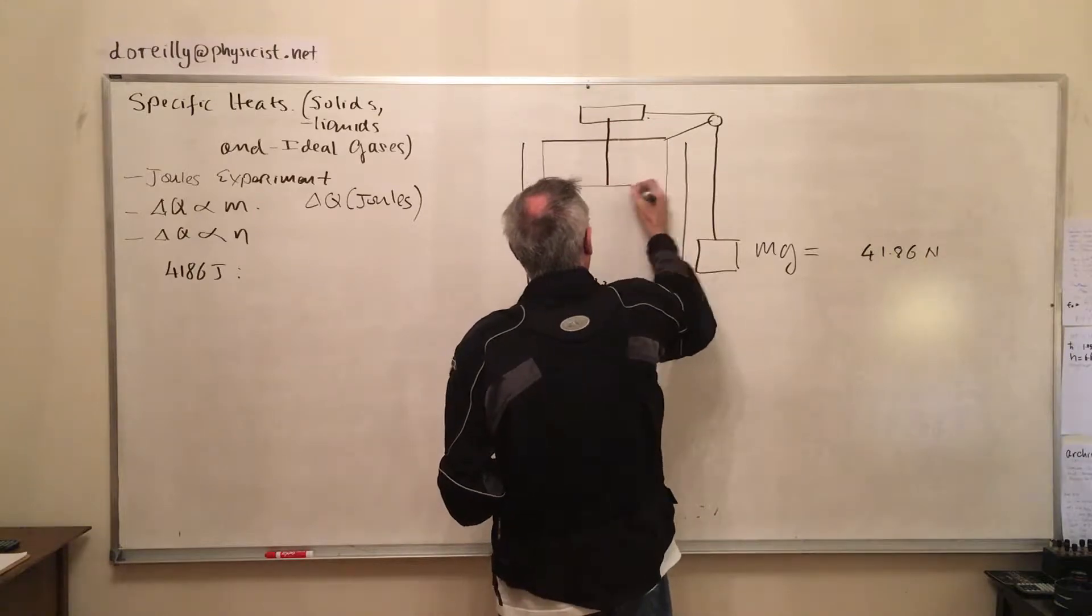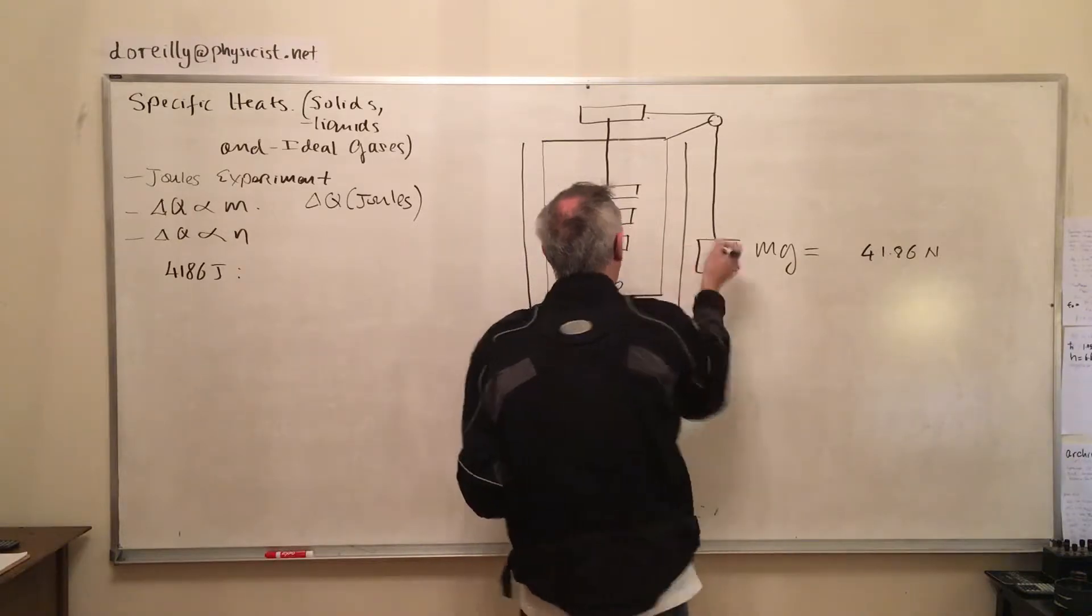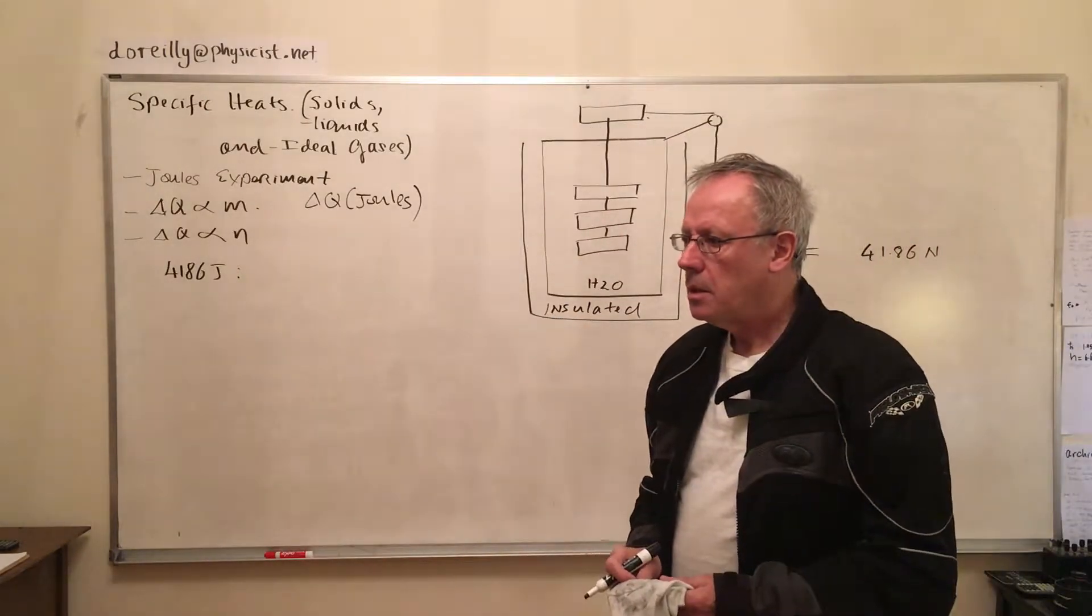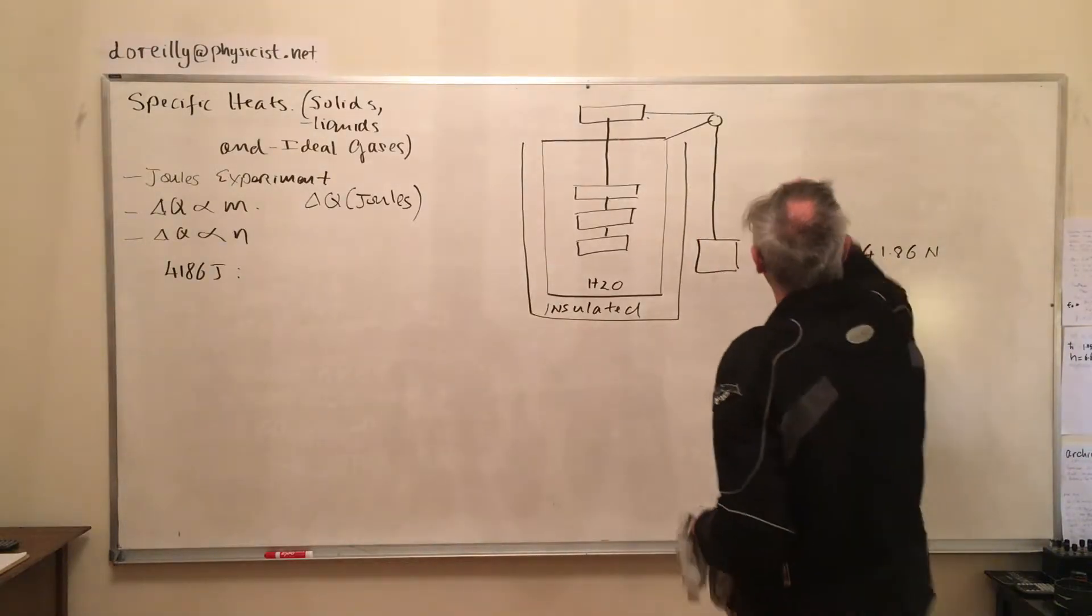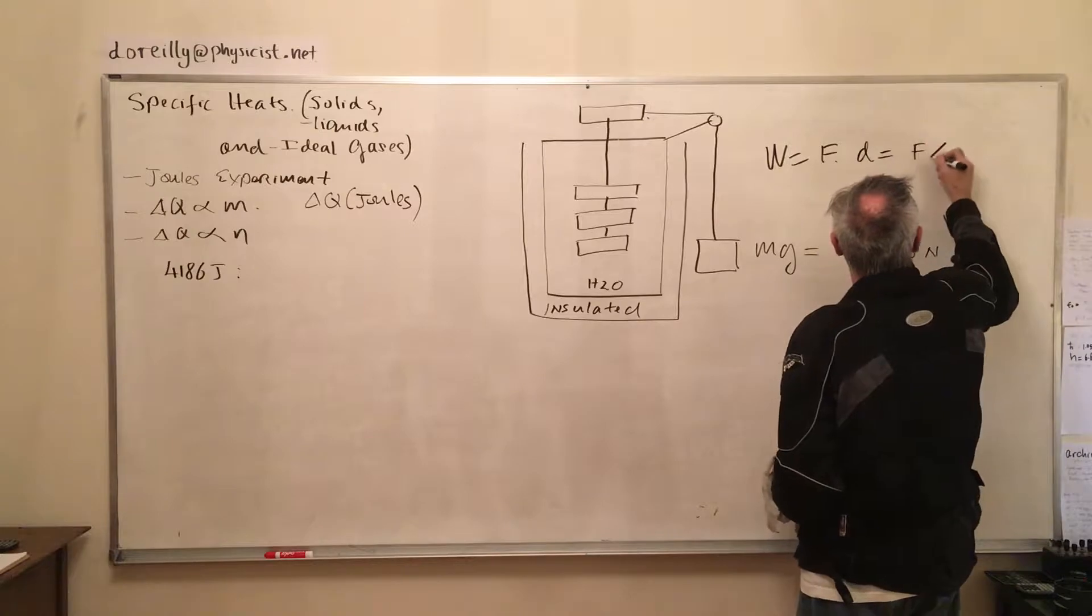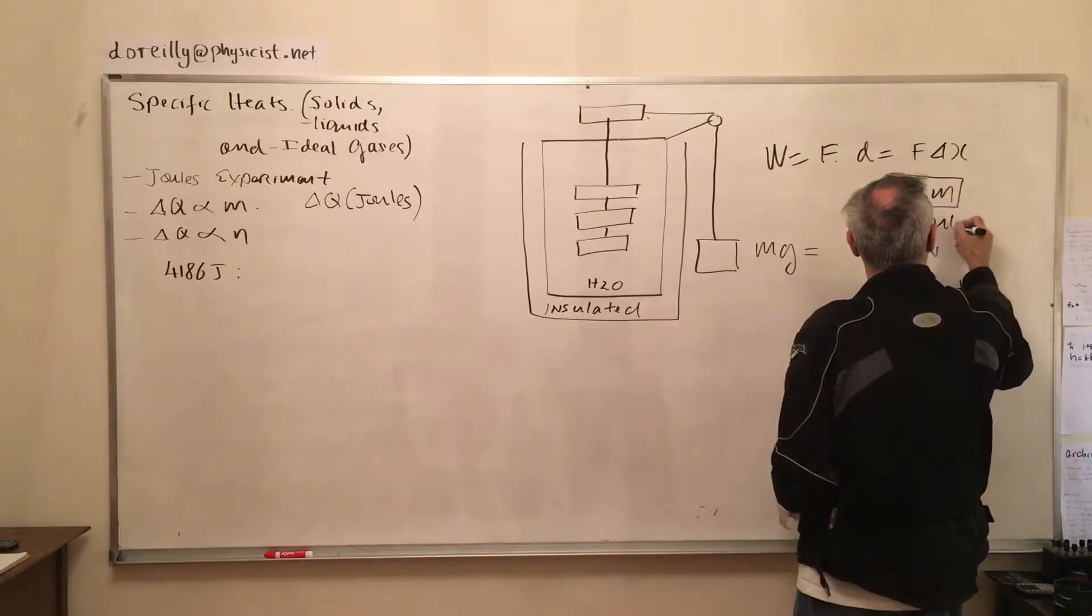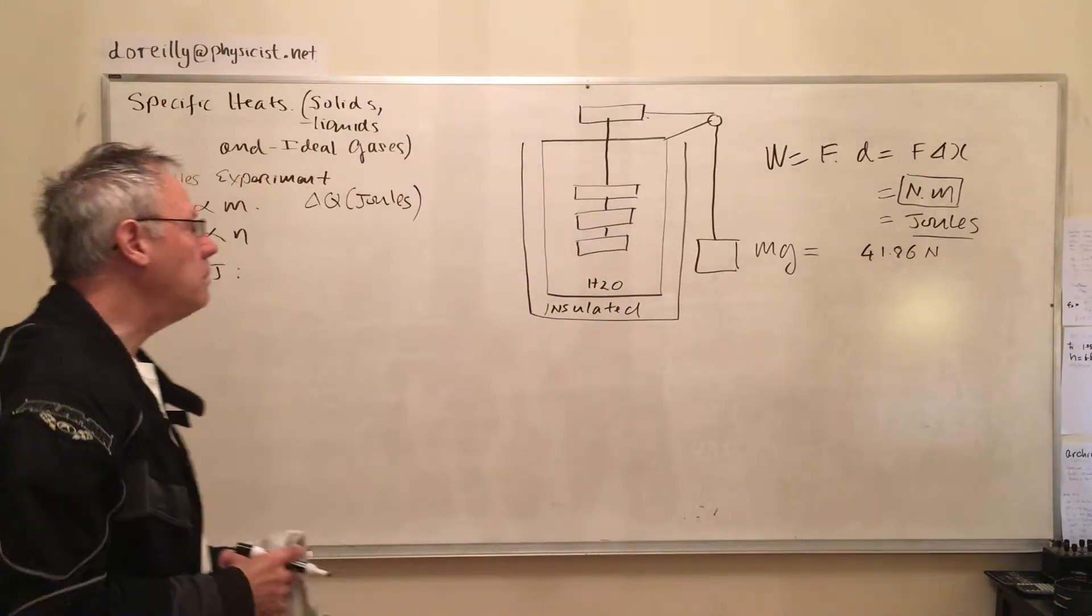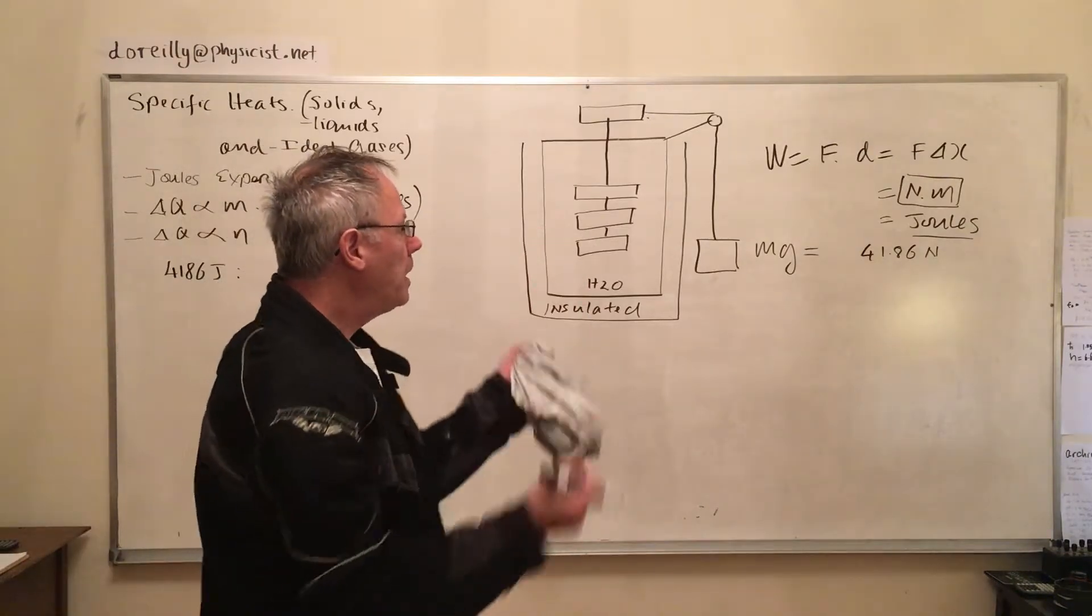And here we have a paddle wheel. The general idea - the wheel spins, the friction between the levers of the paddles and the water will raise the temperature of the water. So we want to find out how much mechanical work is done. The units of work are going to be newton meters. Newton meters put joules on energy.